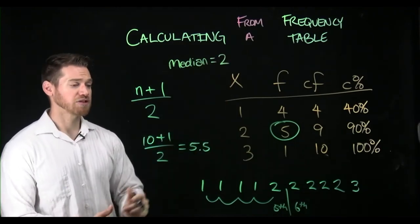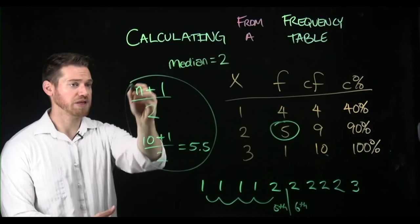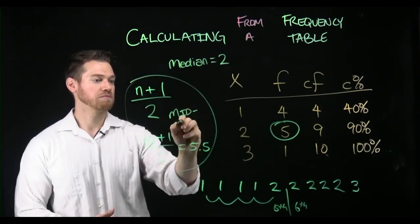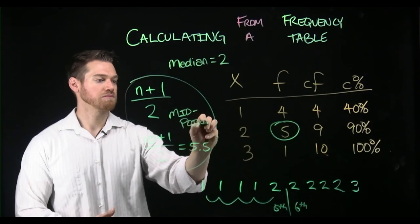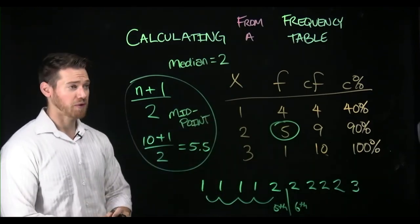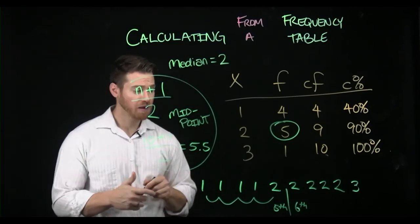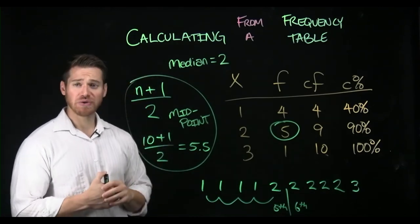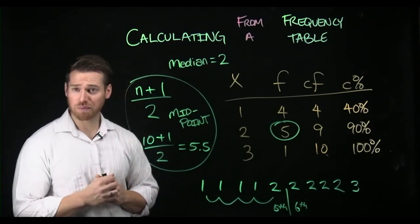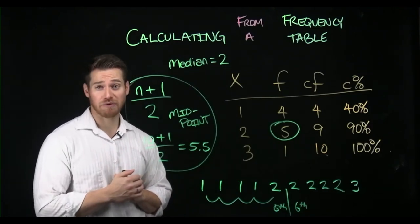Because what we did to find the median was found the midpoint or median location. And then we found the score that exists at the midpoint, the 50th percentile. And so that value is two here, assuming these data are discrete. If they were continuous, we'd have to do a little bit of a different approach. And we'll talk about that in chapter three.